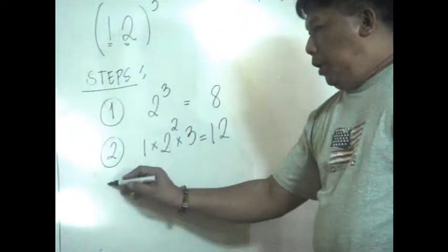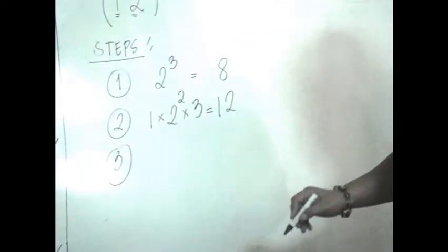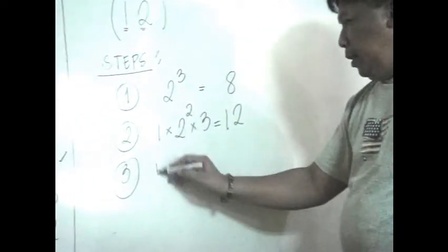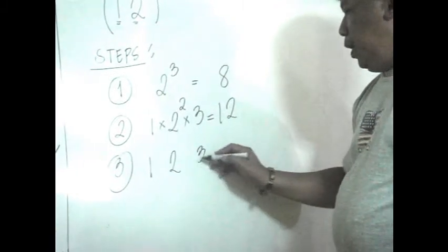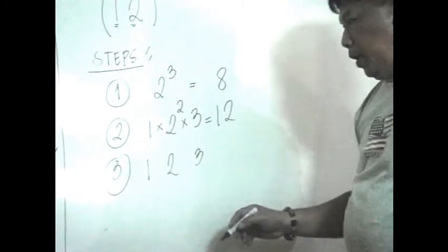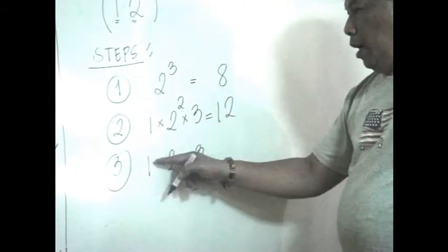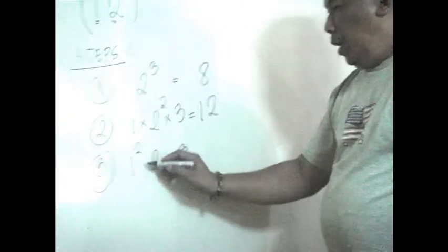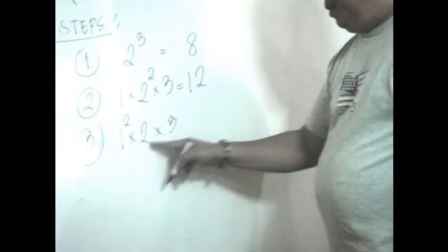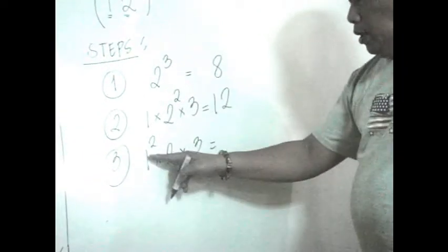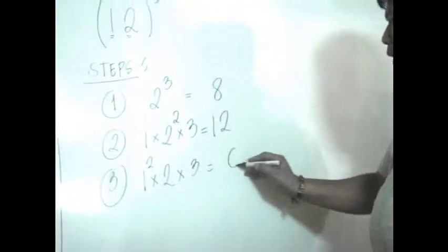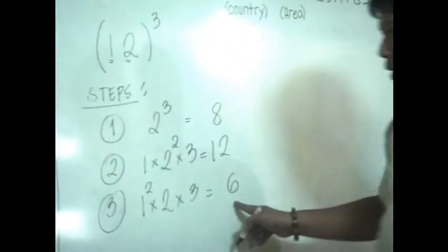Step 3: again write the three numbers — 1, 2, and 3 (our power). This time, square the first term: 1² = 1. Then multiply by the second term and the power: 1 × 2 × 3 = 6.